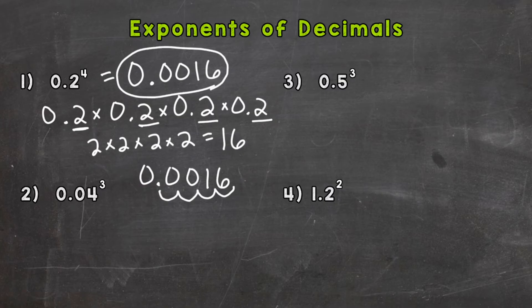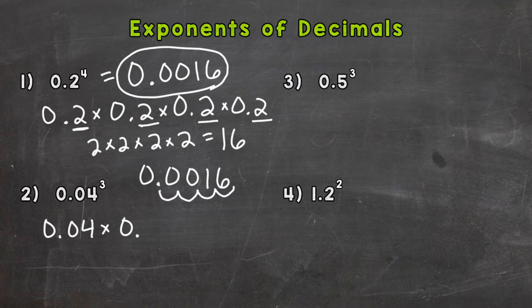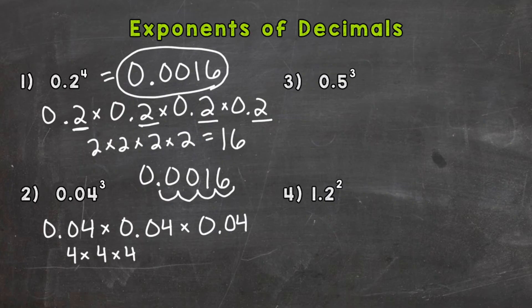Let's do a few more here. Number two: we have four hundredths to the power of three. Let's expand our four hundredths out three times, because that's what our exponent tells us to do. Now let's think of it as a whole four — four times four times four, and then we'll put the decimal back in at the end. So four times four is sixteen, times four is sixty-four.